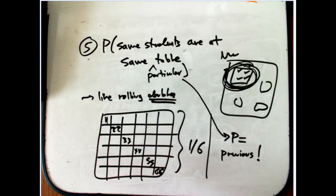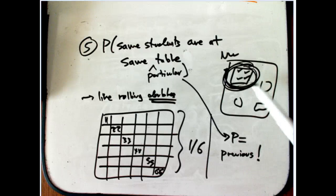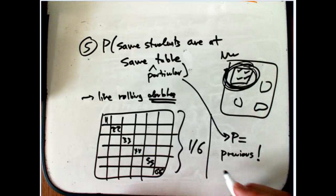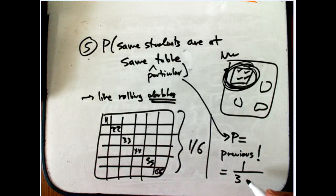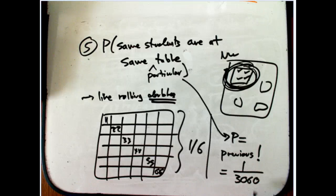So in general, the probability of doubles on anything repeated is really just the probability of any particular one event happening, one particular selection. And so that's going to be 1 over 3060 again.